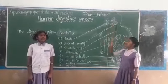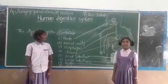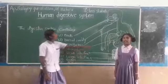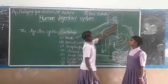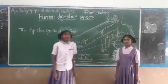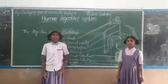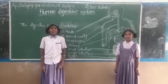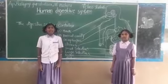This is the Mouth. Food is taken into the body through it. It leads into the Buccal cavity. This is the Buccal cavity. Buccal cavity contains teeth, tongue, and salivary glands.